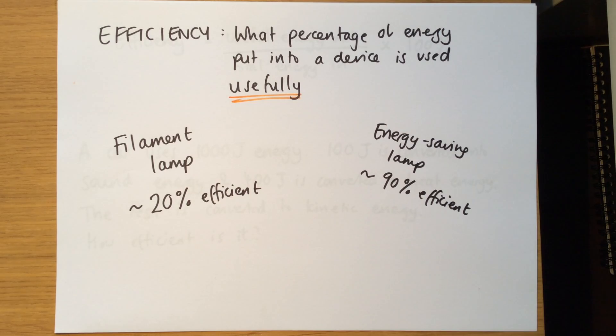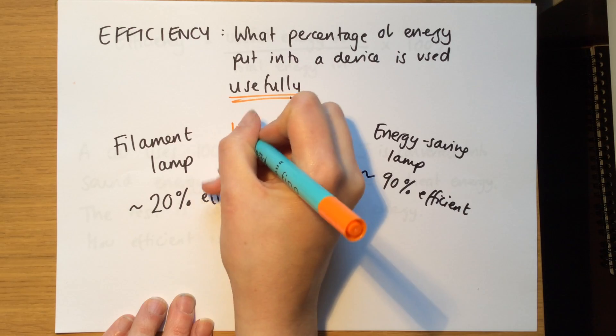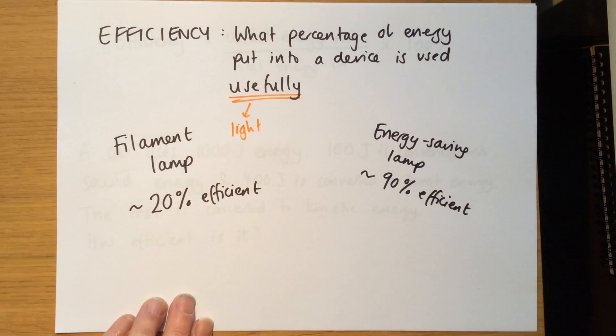Okay, now this is an important concept to think about. So we've got here two lamps, I've not drawn them, but we've got the idea of a lamp. Now a lamp, the useful energy that comes out of a lamp is light, okay, so for us here, the useful one is light for a lamp.